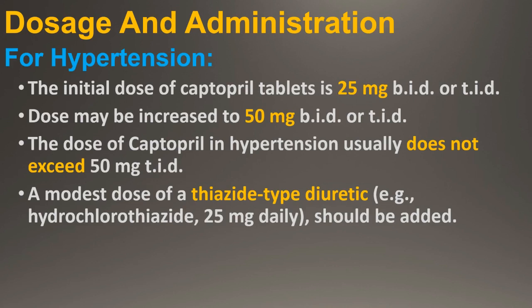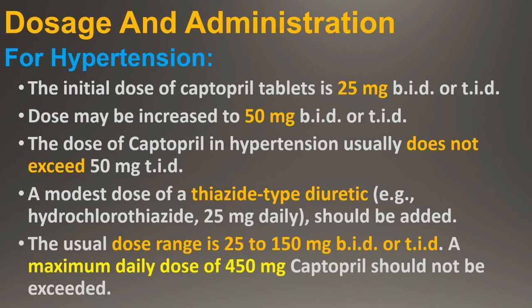The diuretic dose may be increased at one to two week intervals until its highest usual antihypertensive dose is reached. If further blood pressure reduction is required, the dose of Captopril may be increased to 100 mg two or three times a day, and then if necessary to 150 mg two or three times a day while continuing the diuretic. The usual dose range is 25 to 150 mg two or three times a day. A maximum daily dose of 450 mg of Captopril should not be exceeded.